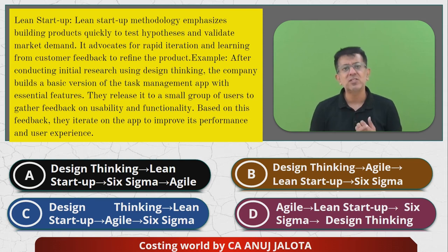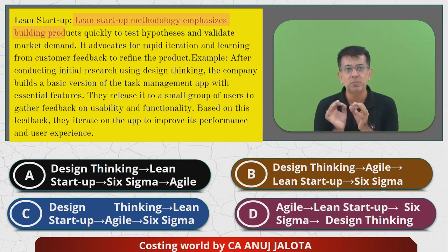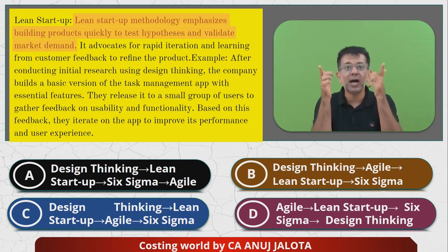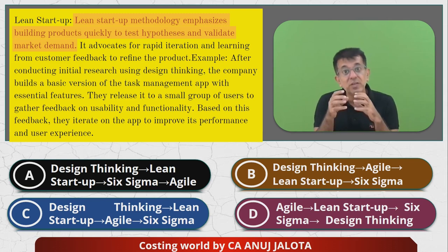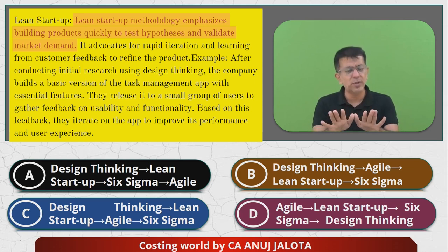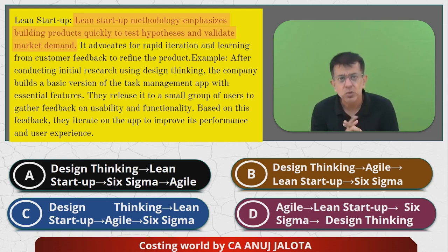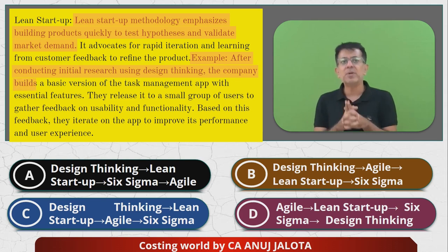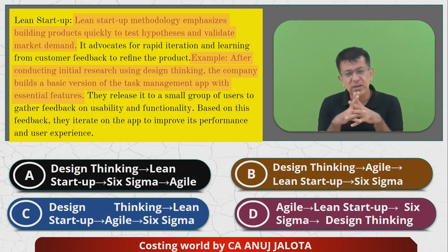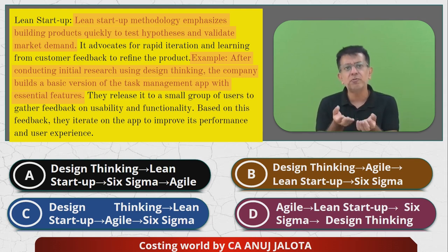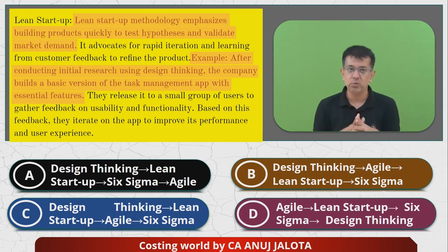The second stage is Lean Startup. 'Lean' means eliminating waste. The Lean Startup methodology emphasizes building products quickly to test hypotheses and validate market demand. You don't know whether customers want your product, so you develop a model and present it to customers — if they say no, you change it based on their feedback. For example, after the initial Design Thinking research, the company builds a basic version of the task management app with essential features and gives it to a small user base, improving performance based on their feedback.